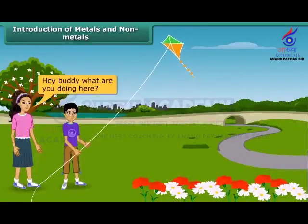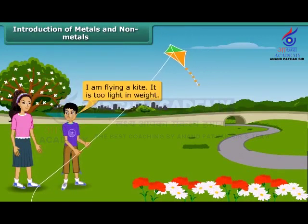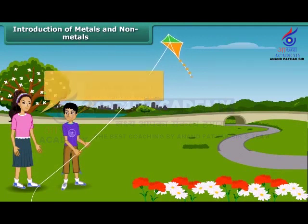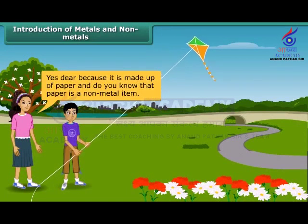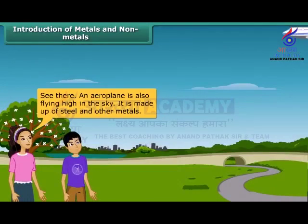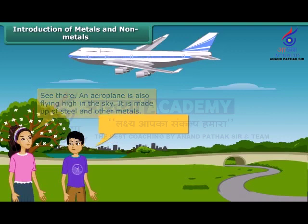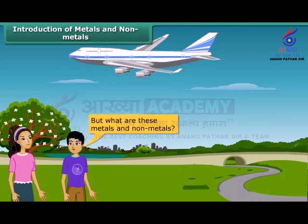Hey buddy, what are you doing here? I am flying a kite. It is too light in weight. Yes dear, because it is made up of paper. And do you know that paper is a non-metal item? See there, an aeroplane is also flying high in the sky. It is made up of steel and other metals. But what are these metals and non-metals?